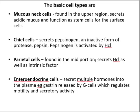The basic cell types are: mucous neck cells, found in the upper region, which secrete acidic mucus and function as stem cells for the surface cells. The chief cells secrete pepsinogen, an inactive form of the protease pepsin, which is activated by hydrochloric acid. Next are the parietal cells, formed in the mid-portion, which secrete hydrochloric acid as well as intrinsic factor. The hydrochloric acid gives the stomach its low pH of around 1 to 3.